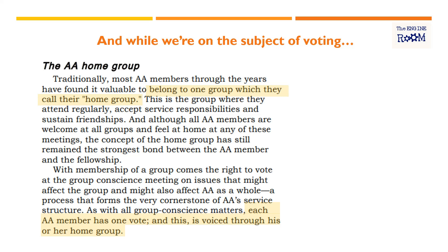It's interesting that in a world where a conference topic was thrown up because more and more members state they have more than one home group these days, we seem to have less participation in AA's service structure. There is a direct correlation. Maybe this is one of the lessons that has been learned painfully across AA's nearly 90-year history. If we respect the one group, one member, one vote principle, it flows on to having districts and areas opened and groups participating — the very cornerstone of AA's service structure.